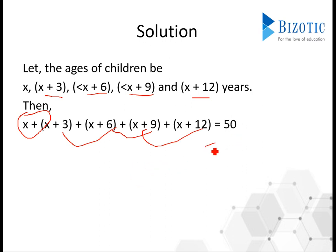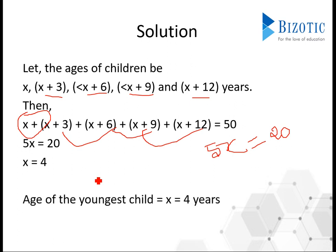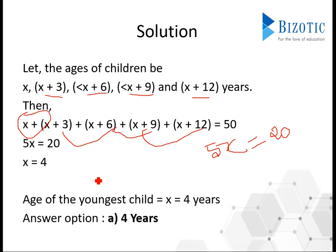So 5x is equal to 50 minus 30, which is equal to 20. And from this, x is equal to 20 by 5, which is equal to 4. That clearly gives us the age of the youngest child, which is 4 years. The right option will be option A, 4 years.